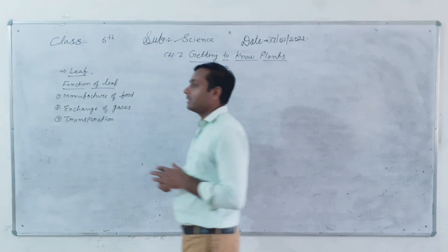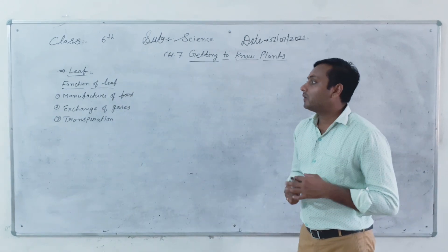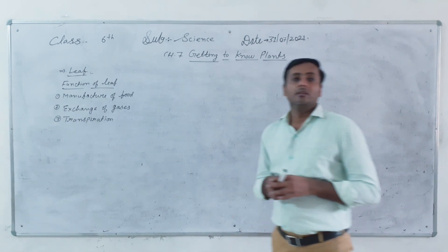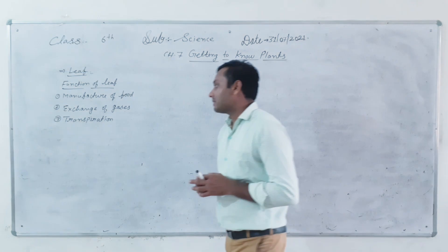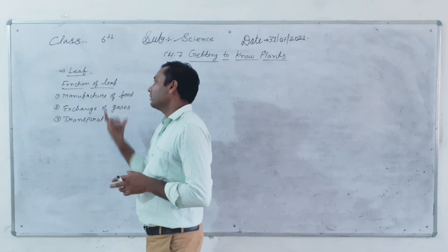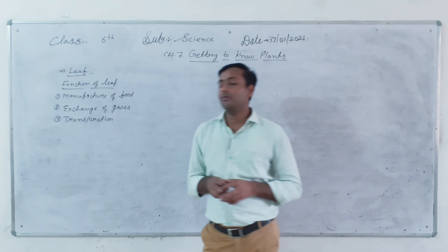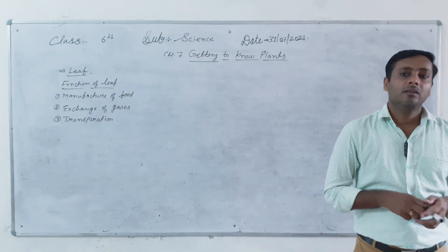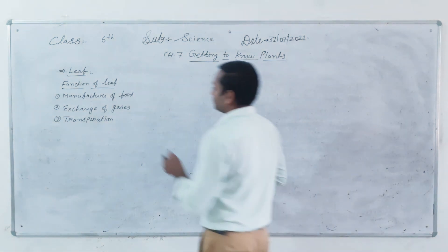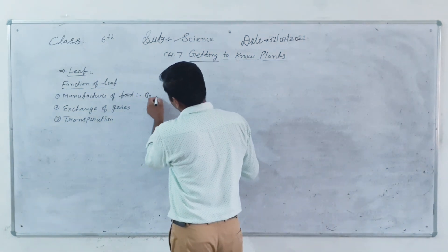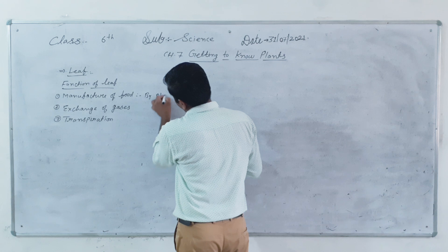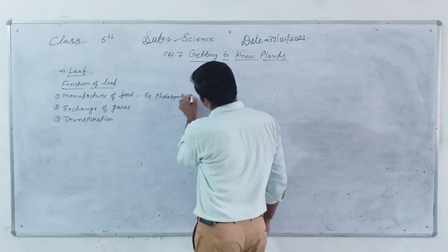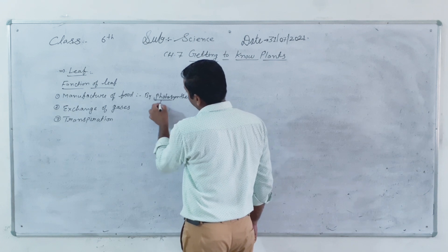The leaf was discussed in the previous class. The function of the leaf is the manufacturing of food, by the process of photosynthesis.